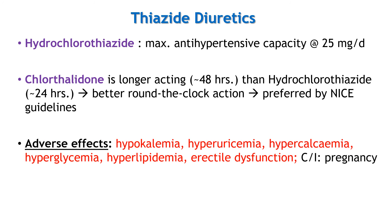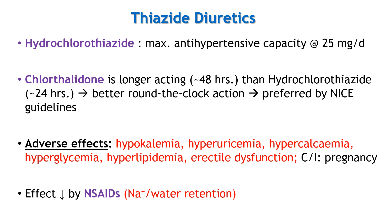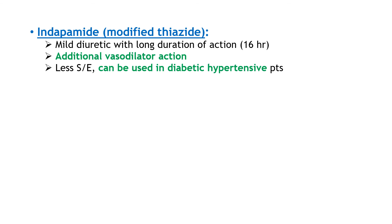The adverse effects of thiazides include hypokalemia, hyperuricemia, hypercalcemia, hyperglycemia (so they are contraindicated in diabetics), and hyperlipidemia. They are also contraindicated in pregnancy. Thiazides should be avoided concurrently with NSAIDs because NSAIDs, by decreasing prostaglandin synthesis, induce salt and water retention and decrease the effect of thiazide. Indapamide is a modified thiazide — it is a mild diuretic with long duration of action and has additional vasodilator action. Its side effects are less, and in contrast to other thiazides, it can be used in patients with diabetic hypertension.